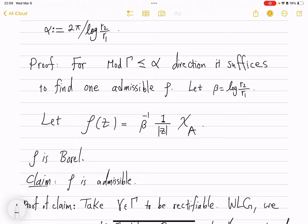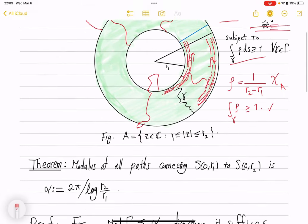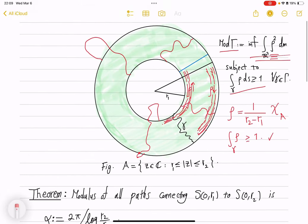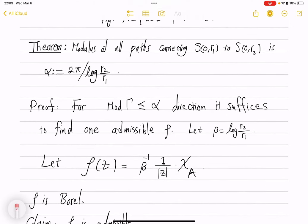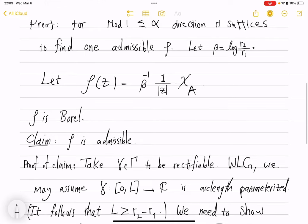And again, you don't want anything outside the annulus. You won't need it. So you multiply with the cutoff. And we will see that this beta is the right number, which, similar to what happened here, you put up front so that you will integrate to more than one. And this beta is this log r2 over r1, which is different from alpha up to this 2π factor. So this ρ is obviously a Borel function.